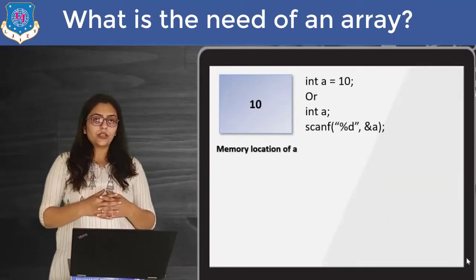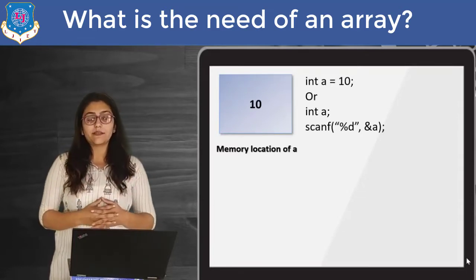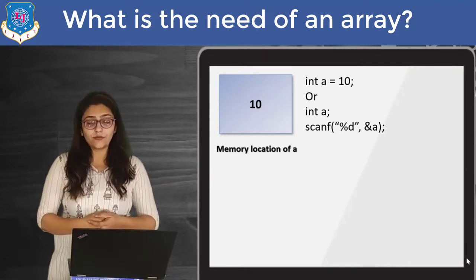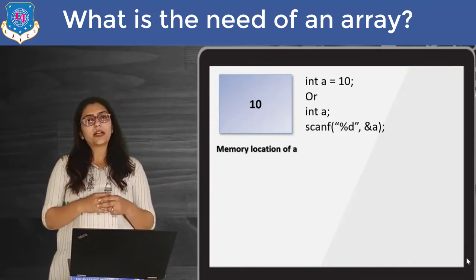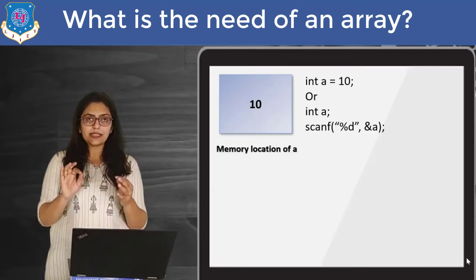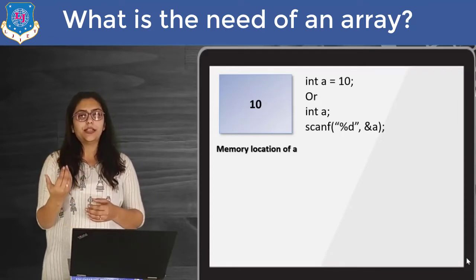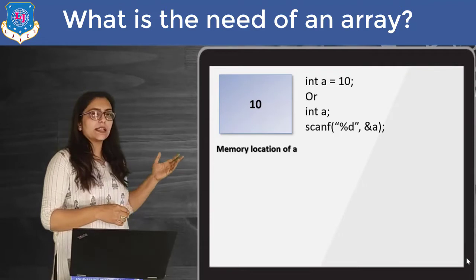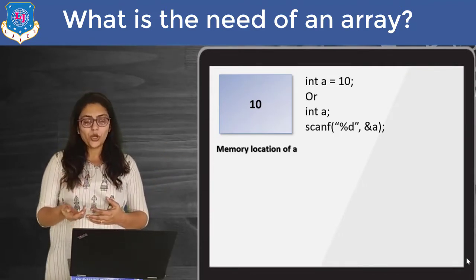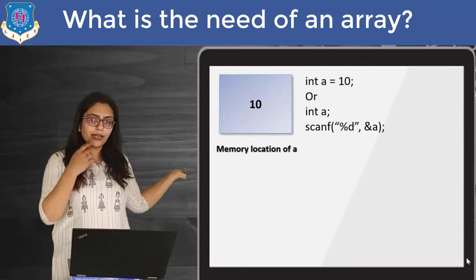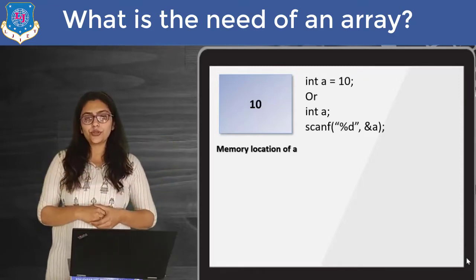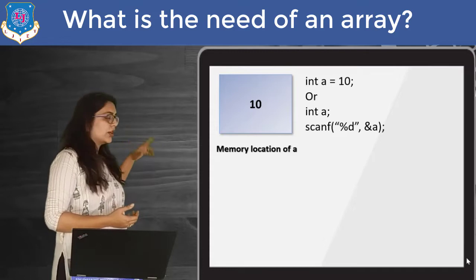The first question that may arise is: what is the need of an array? What exactly is an array and why is it needed? Let me give you one example. Suppose you have declared one variable named A and given it data type integer. So you can write something like int a. Now I can initialize its value at compile time or run time. If I am initializing at compile time, I can write a equal to 10. Otherwise, you can also ask a user to enter some value.